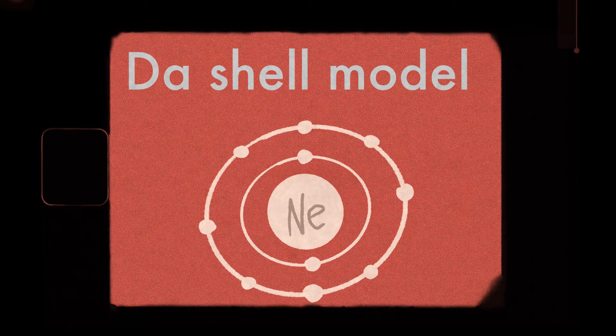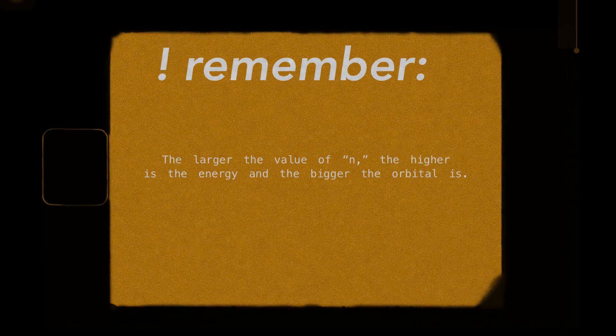Prior to the quantum mechanical model, we had the Shell model — and no, it's not the petrol station. The Shell model is based on Coulomb's law and predicted where the electrons will be. It was great at making predictions, but it relied more on probability than certainty. So then, we moved on to the quantum mechanical model.